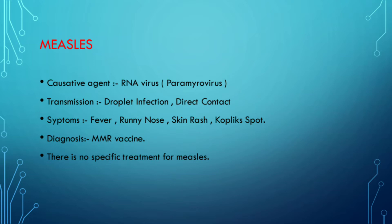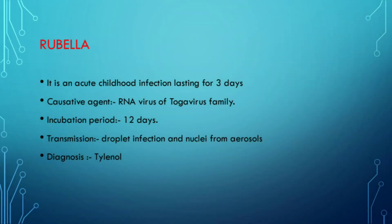There is no specific treatment for measles. Third is rubella, which is an acute childhood infection lasting for three days. The causative agent is an RNA virus of the togavirus family. The incubation period is 12 days. The virus is directly transmitted by droplet infection and nuclei from aerosols. Tylenol is used for the management of rubella.